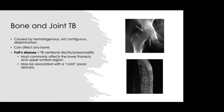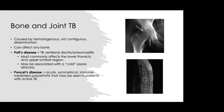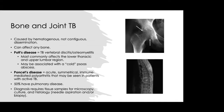Bone and joint TB spreads by hematogenous spread and can affect any bone. Pott's disease is TB in the vertebrae causing discitis and osteomyelitis, most commonly in the lower thoracic and upper lumbar regions, and may be associated with a cold psoas abscess. Poncet's disease is a type of polyarthritis seen in active TB — acute, symmetric, and immune-mediated. 50% with bone and joint TB will have pulmonary disease. Diagnosis requires tissue for microscopy, culture, and histology.